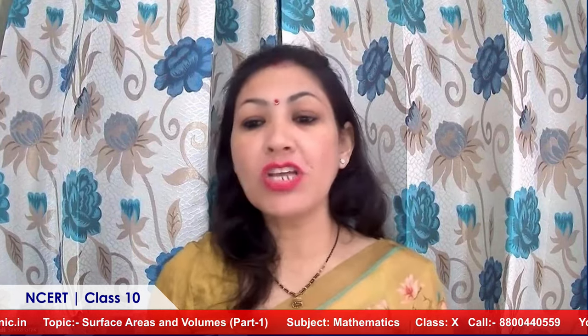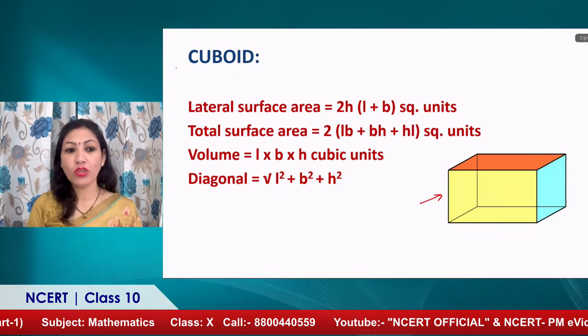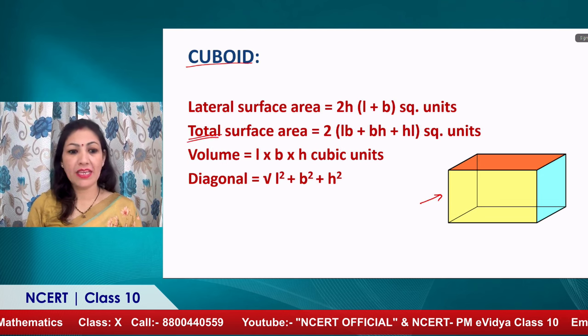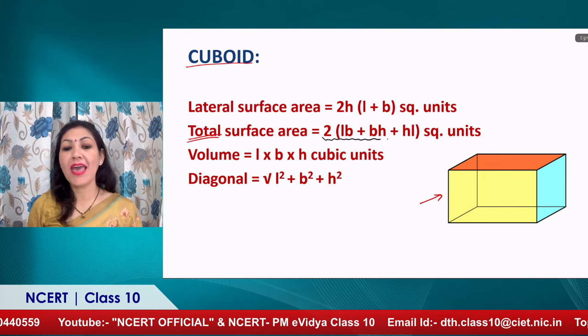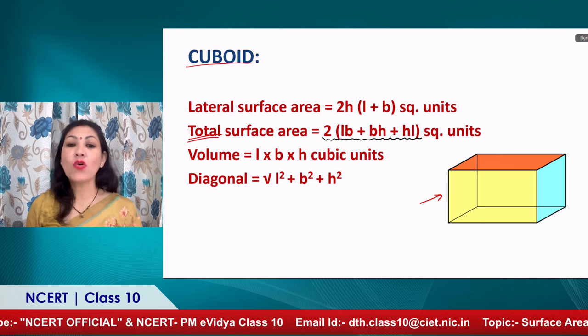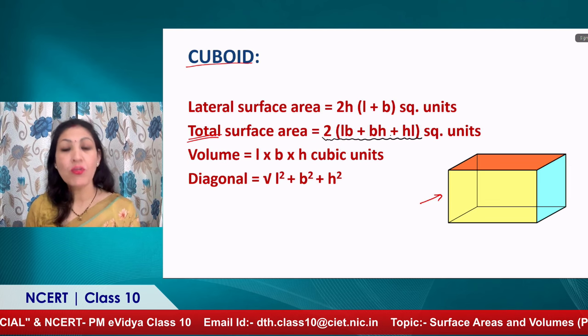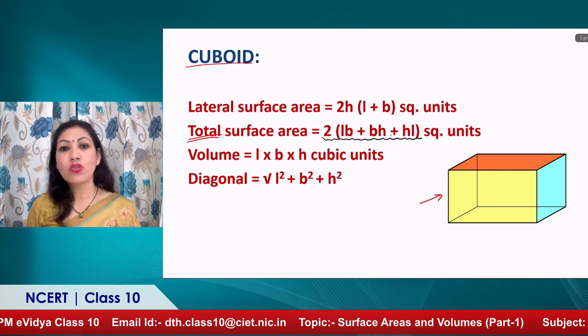First of all, let us discuss what the formulas are — let us recall quickly. On the screen, our viewers can see there is a cuboid. The total surface area of the cuboid is 2 × (LB + BH + HL). Each cuboid has 6 faces — two each of three pairs of congruent rectangles.